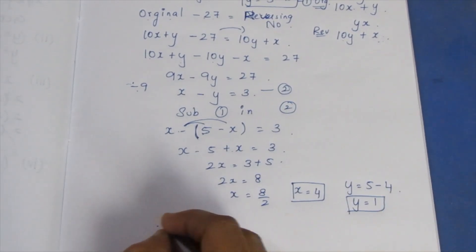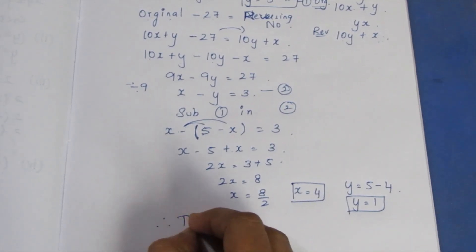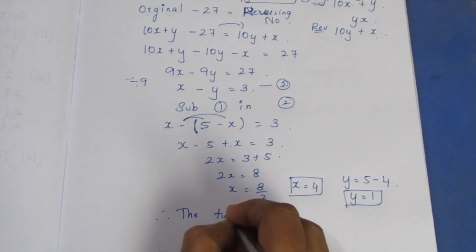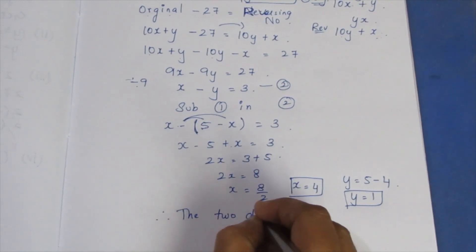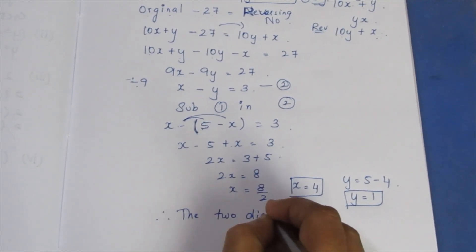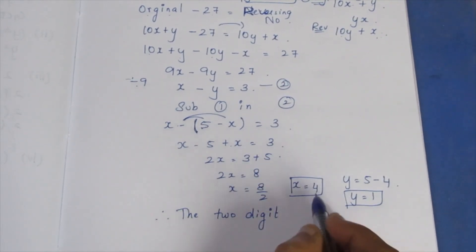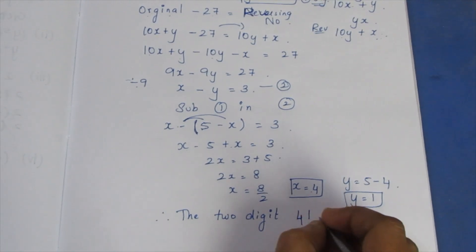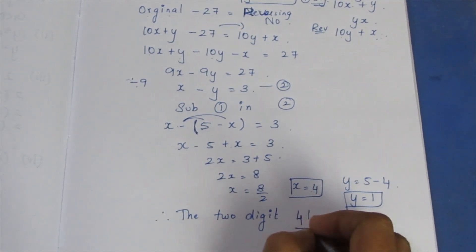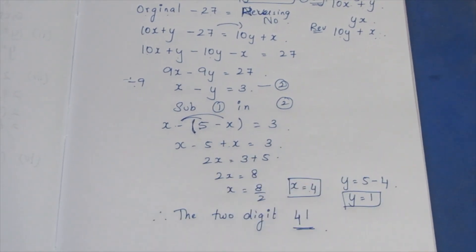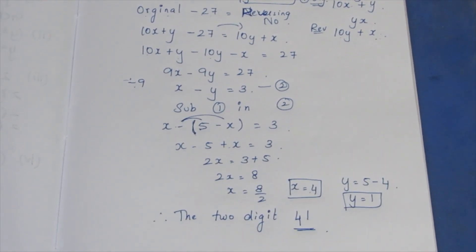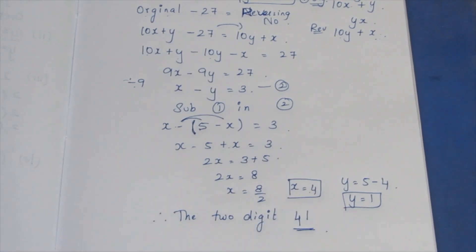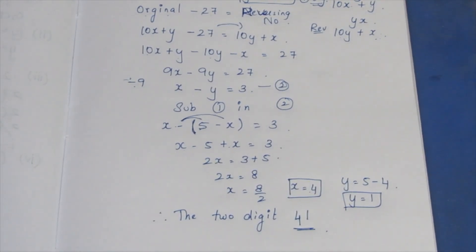Therefore, the two-digit number: the tens digit x = 4 and the units digit y = 1. So the two-digit number is 41. Thank you.